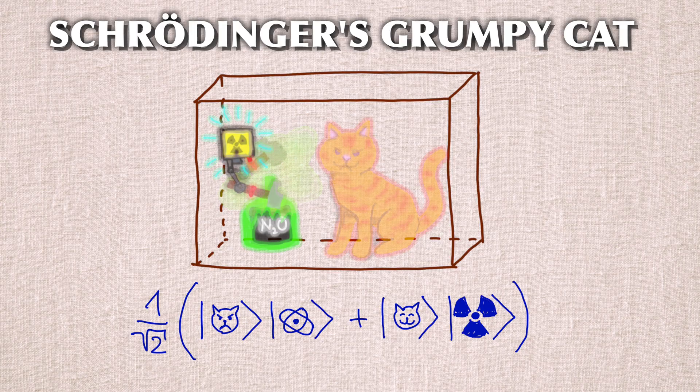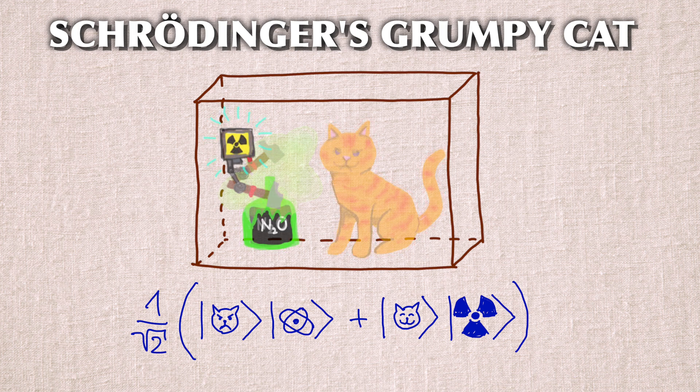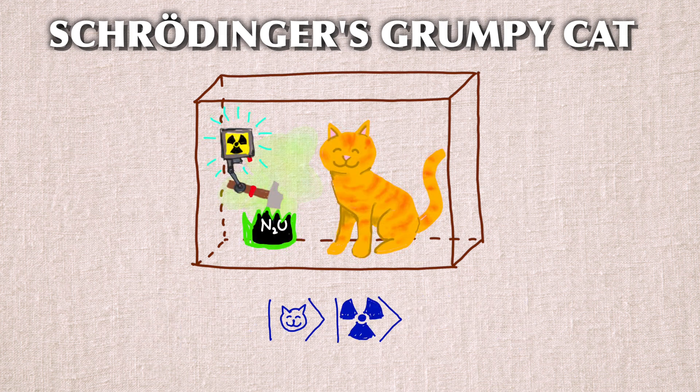The entire point of this is that the quantum superposition of the quantum system, of the atom, is transferred to a large system, to a cat. The cat is forced into a superposition of quantum states, both grumpy and happy. Only when the box is opened and the cat is observed, the superposition will supposedly collapse and give one of both outcomes.